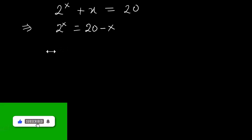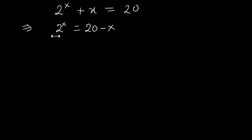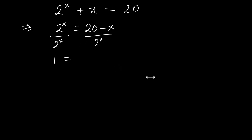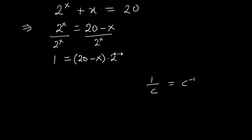Now I want everything on the right side, so I'll divide both sides by 2 raised to X. We get 1 equals (20 minus X) over 2 raised to X, which is the same as (20 minus X) times 2 raised to negative X.